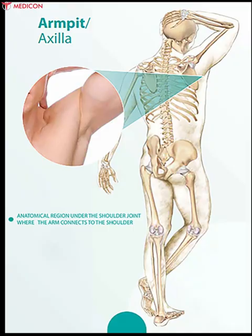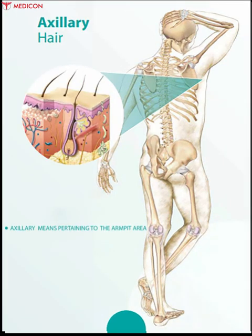Axilla is an anatomical region under the shoulder joint where the arm connects to the shoulder. Axilla is also known as the armpit. It contains a variety of neurovascular structures including the axillary artery, axillary vein, and lymph nodes. Axillary means pertaining to the armpit area, including the lymph nodes that are located there.